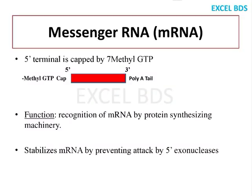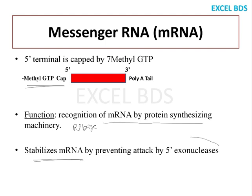The 5' end of mRNA is capped by methyl GTP. The function of this cap is twofold: first, it aids recognition of the mRNA by the protein-synthesizing machinery, which is the ribosome; second, it gives stability to the mRNA by preventing attack by the 5' exonuclease enzyme, which would otherwise start digesting the mRNA from the 5' end. Capping prevents this enzyme from acting on the mRNA.